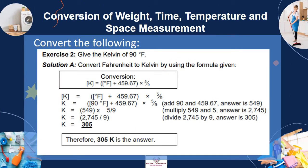Exercise 2: Give the Kelvin equivalent of 90 degrees Fahrenheit. Solution: Convert Fahrenheit to Kelvin using the given formula. Therefore, 300 Kelvin is the answer.